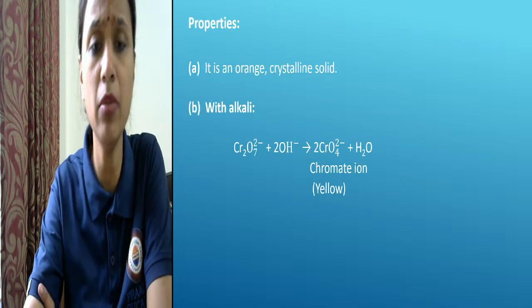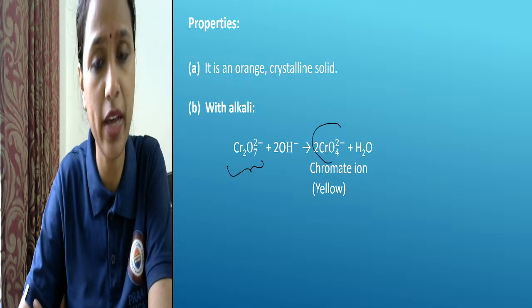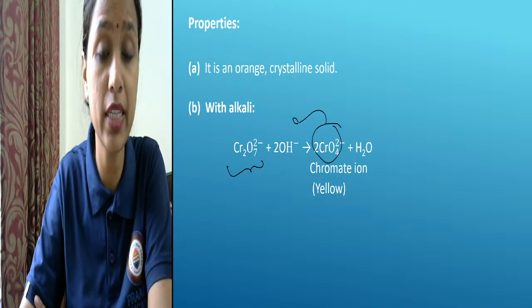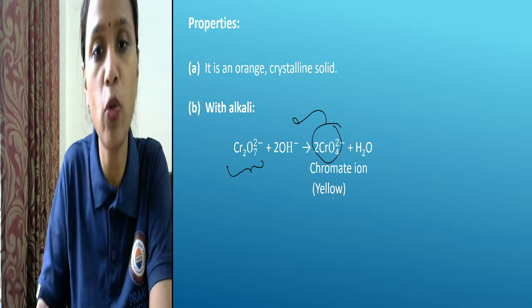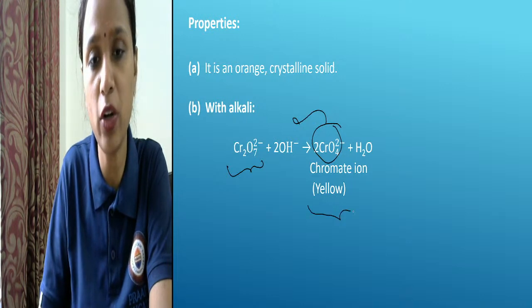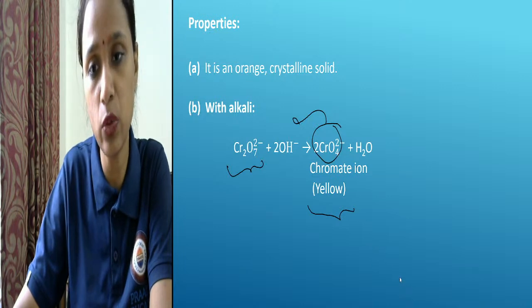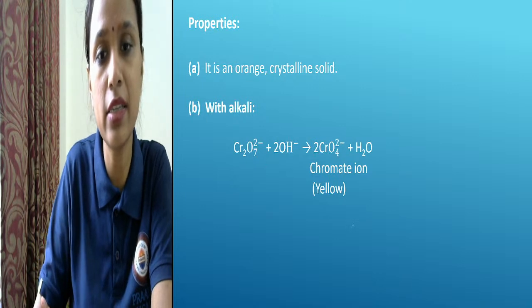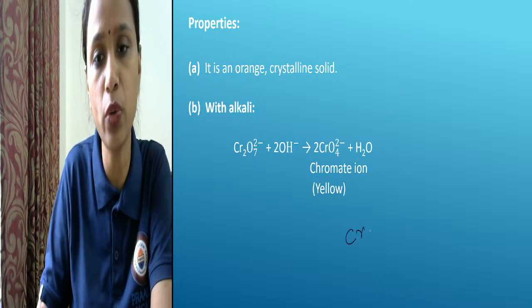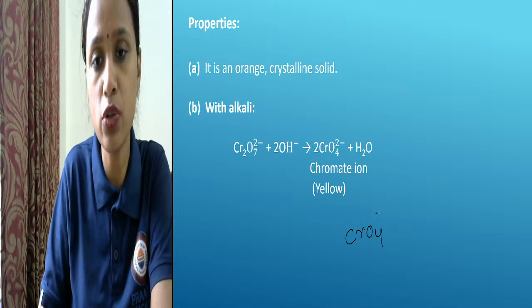Properties: if we treat dichromate with alkaline medium it will convert to chromate, and if we treat chromate with acid it will become dichromate. Chromate's original color is yellow; dichromate's color is orange-red.